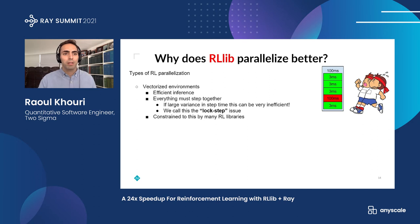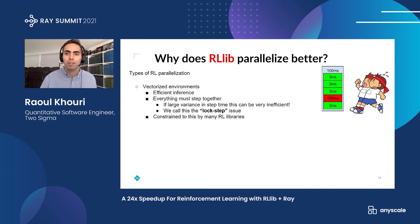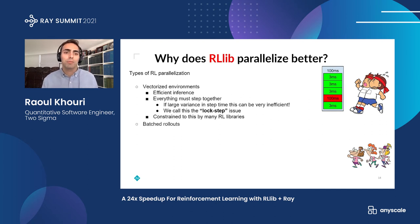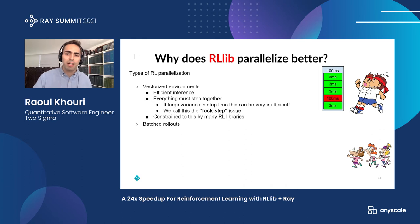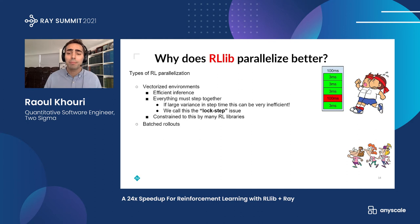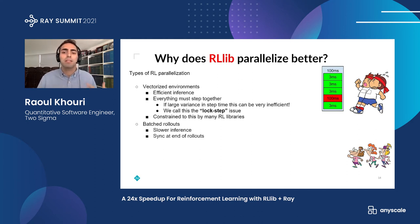The other type of parallelization is batched rollouts. The main idea is you give workers a task — go collect 1,000 samples — they all go collect them and come back. You do have to wait at the end, but you don't have to wait at every single step. It's a little less efficient at inference, but since you sync at the end of the rollouts you have a lot less waiting and you actually get to avoid a lot of this lockstep issue.